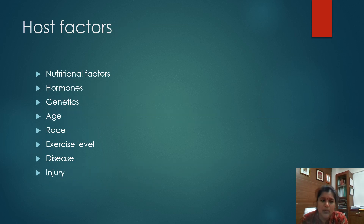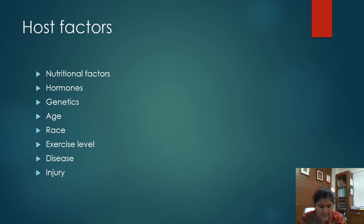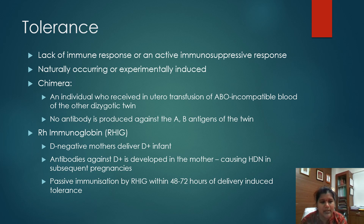There are multiple host factors that determine a good antigen-antibody reaction. They include nutritional factors, hormones, genetics, age, race of the individual, exercise level, disease conditions, and injuries. The next important feature of antigen-antibody interaction is tolerance. Tolerance is nothing but either a lack of an immune response or an active immunosuppressive response — either way, there is no immune response. It can be naturally occurring or experimentally induced.